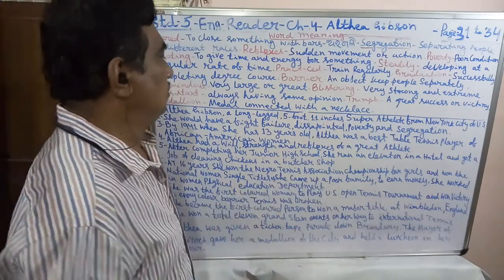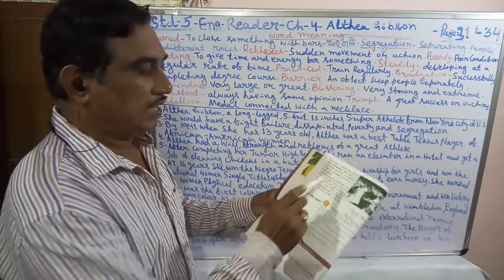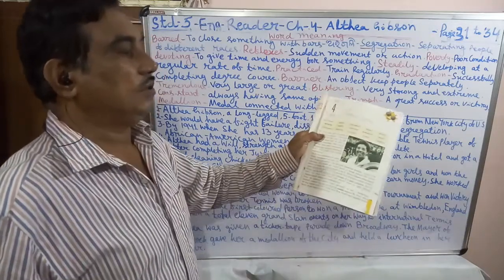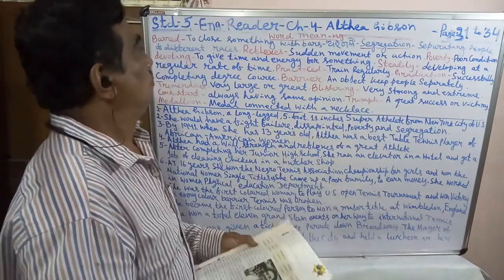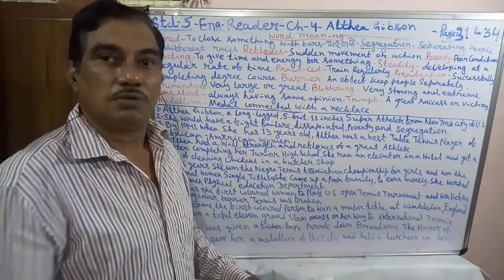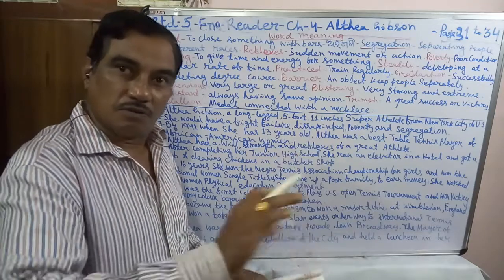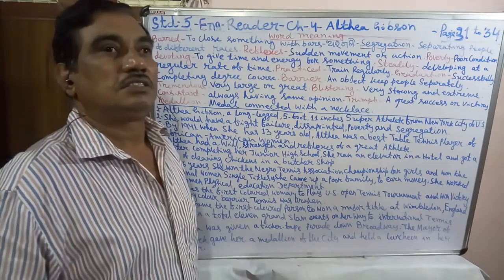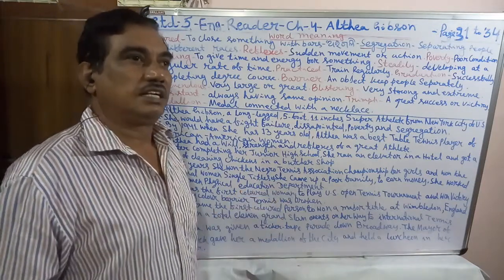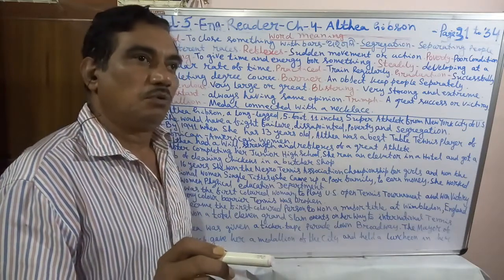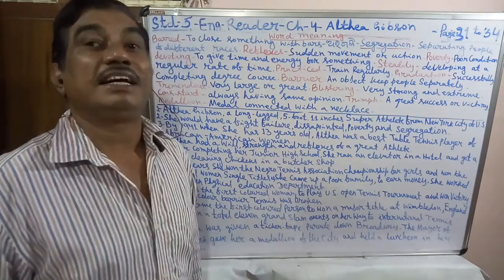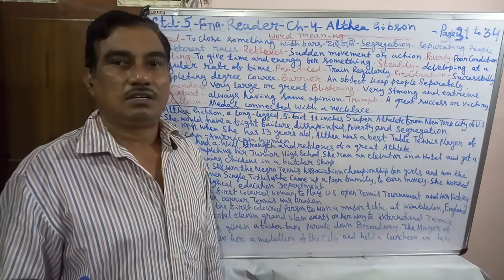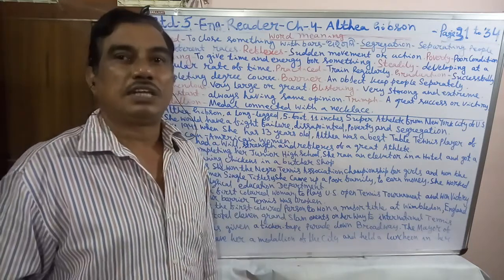First of all we will start the word meanings given. 'Bar' means to close something with a bar. 'Horrible' means a horrible thing. 'Contentment' means satisfaction. 'Necessary' means things which are required. 'Segregation' means separating people of different races, different castes — black color, white color — differences of race. Segregation is racial discrimination.